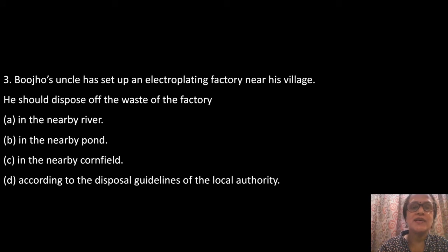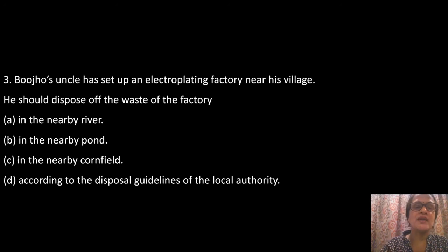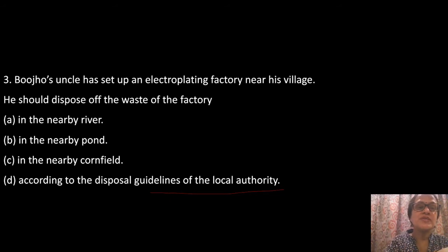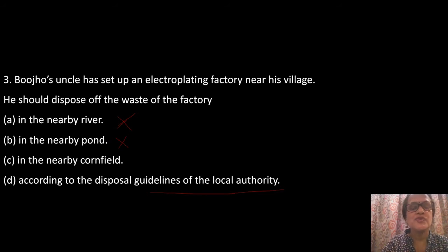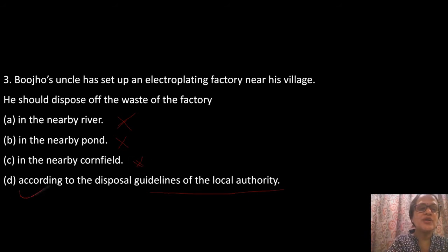Question 3: Boucho's uncle has set up an electroplating factory near his village and needs to dispose of the factory waste. You cannot dump the waste in a nearby river, pond, or cornfield as it will pollute them. The correct option is D — disposal must be done according to the disposal guidelines of the local authority.